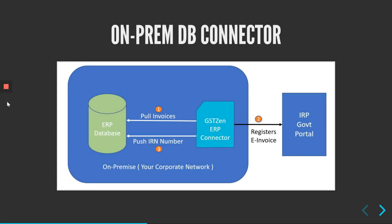Let us now see a schematic of how the database connector works. First, you have your ERP or your database which stores all your invoice data. Users will use front-end software — either desktop or cloud-based — and all that data will sit in this database. The GST-Zen ERP connector is an on-prem software, so it runs in your network locally. You do not have to expose your database to the internet. This connector will sit next to the database, or even in the same computer that runs the database, and it will pull invoice data. That's step number one.